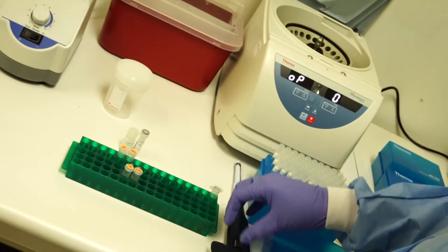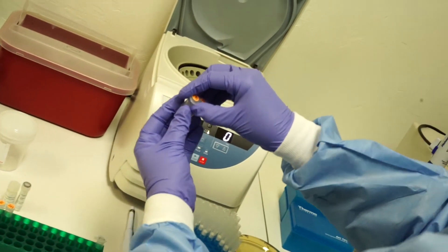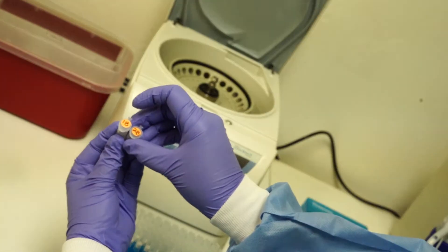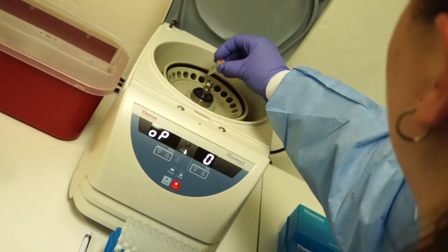Once you have transferred your supernatant, place the samples back into the centrifuge. This time you will spin at 14,000 rpm for 3 minutes.